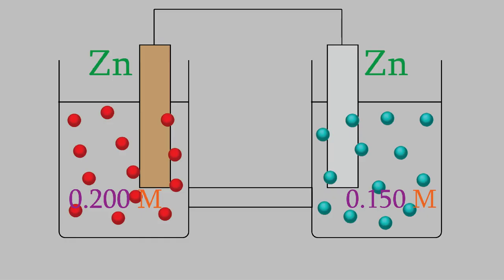The same idea is true in our voltaic cell. The two solutions are connected by the wire between the electrodes, and the two concentrations will try to become equal.